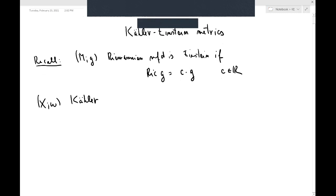We want to find a Kähler metric omega prime such that the Ricci form of omega prime is equal to lambda times omega prime, for lambda.